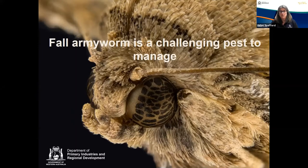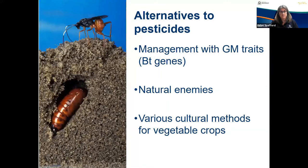These management tools need to be tailored for Australian commodities, landscapes, and conditions. If we learn anything from the overseas experience, we know that we need alternatives to pesticides to manage fall armyworm. Overseas, there are options to include genetically modified traits that will affect fall armyworm, but other than cotton, we do not have that option available at this time in Australia. So we need to look to other alternatives for management, such as natural enemies and cultural control methods.